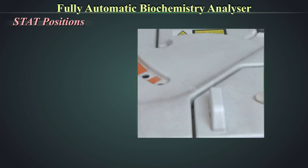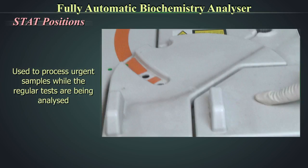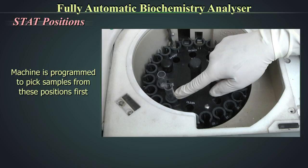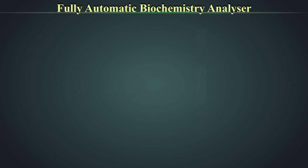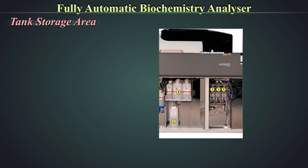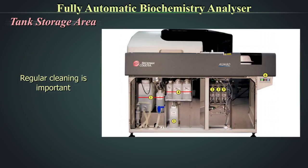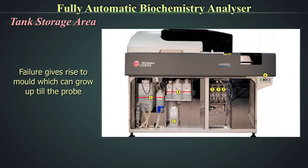Stat positions are used to process urgent samples while regular tests are being analyzed; the machine is programmed to pick samples from these positions first. The tank storage area houses the deionized water tank, wash solution tank, and diluted wash solution tank used to clean cuvettes, mix bars, and the rinse component. Regular cleaning of this water tank and filters is very important, as failure to do so may give rise to mold which can grow up to the probes.